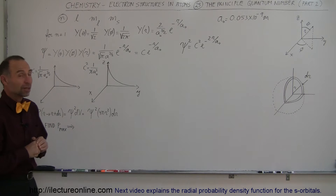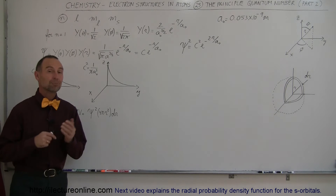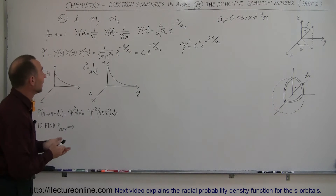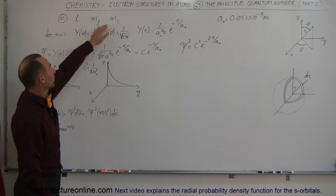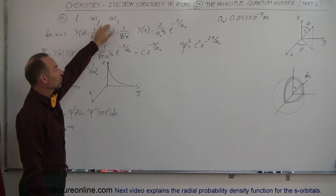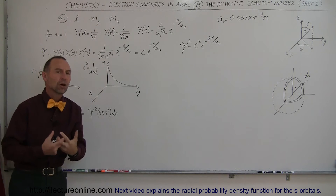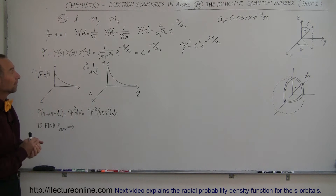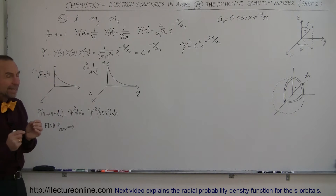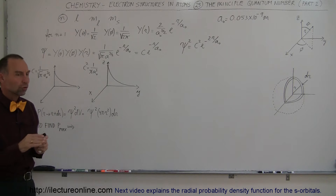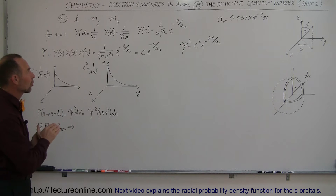In our next video, we're going to talk a little bit more about the principal quantum number N. This is one of the four quantum numbers — N, L, M sub L, and M sub S — that define the structure of the electron around the nucleus of an atom. Here we're going to relate it to the solutions of the Schrödinger equation for the hydrogen atom.